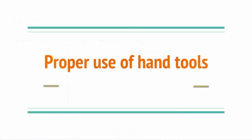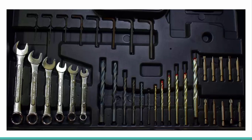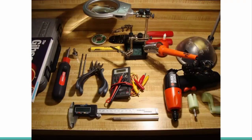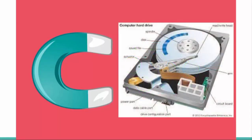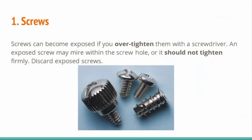In proper use of hand tools, a computer technician needs to use the right tools from their toolkit while fixing computers. It is important to know how to properly use tools in workspaces. When working with electronic devices, ensure that the tools you are using are not magnetic, as magnetic fields can potentially damage data stored on magnetic media. To check if a tool is magnetic, hold a screw near it — if the screw is attracted to the tool, it shouldn't be used. Screws can become stripped if you over-tighten them with a screwdriver. A stripped screw may get stuck in the screw hole or may not tighten firmly. Discard stripped screws.